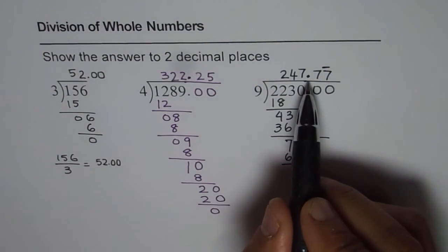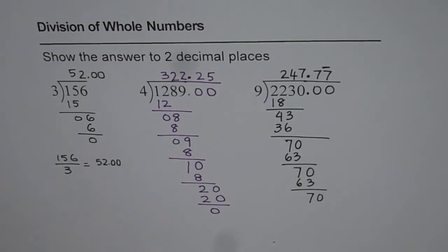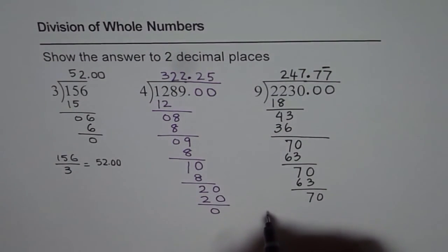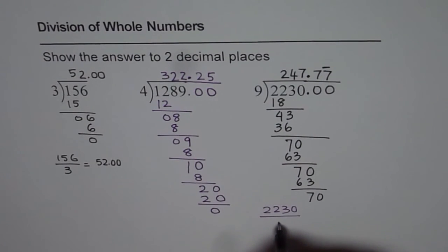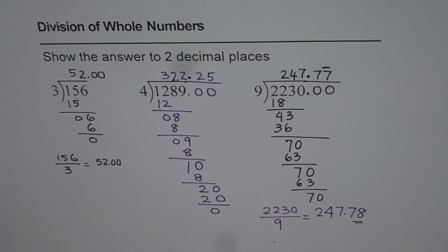So what should be our answer? In this particular case we have to round to 2 decimal places, and we should write 2230 divided by 9 as equal to 247.78. That is another place where you can lose another half mark and so get just one mark less than the whole.